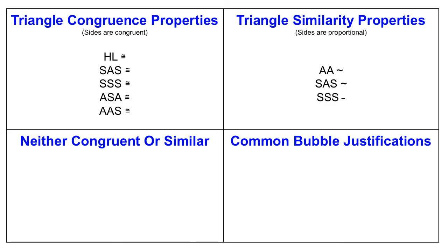There's three triangle similarity properties, angle-angle, side-angle-side, and side-side-side. The big difference here is that the side lengths have to be proportional to one another instead of congruent.